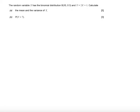In this question, we're told the random variable X has the binomial distribution where n is 10 and the probability of success is 0.3. We're also told that Y equals 2X plus 1. Part A asks to find the mean and variance of Y.